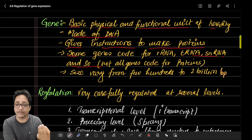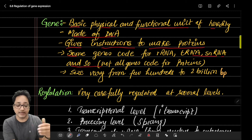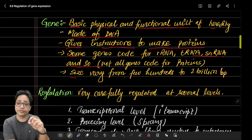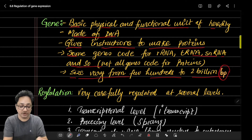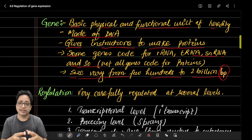It doesn't mean that genes are only responsible for the synthesis of protein. They also synthesize other molecules like snRNA, ribosomal RNA, and transfer RNA, and they are still considered genes. Through evolution, from microscopic to higher organisms, the size of genes may vary from a few hundreds to a few billion base pairs.